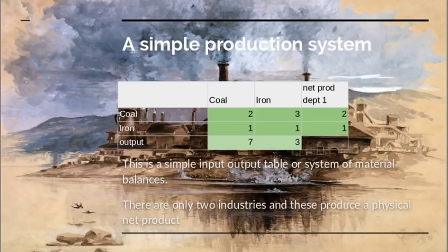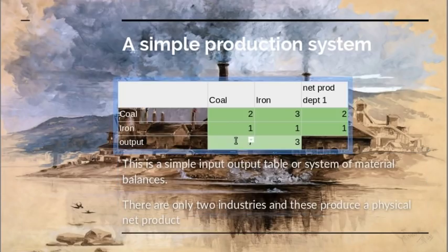Consider a simple economy, which I'm showing using an input-output table — a didactic tool I use in a lot of these talks. We have two industries: a coal industry and an iron industry. The coal industry produces seven units of coal, using up two units of coal and one unit of iron. The iron industry produces three units of iron, using one unit of iron as tools and three units of coal to fire its furnaces.